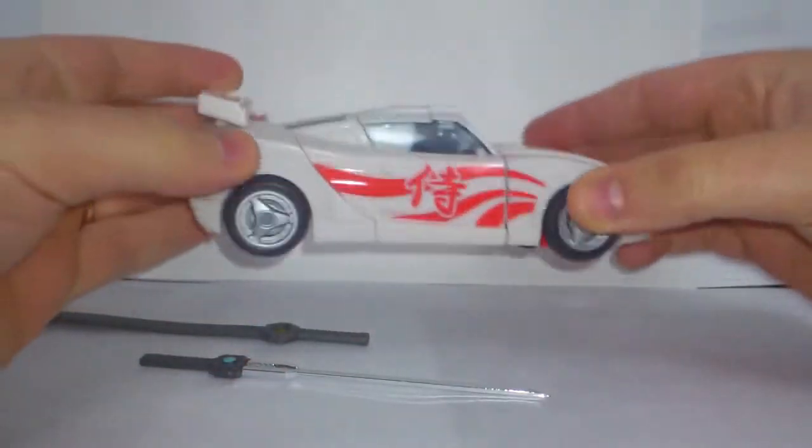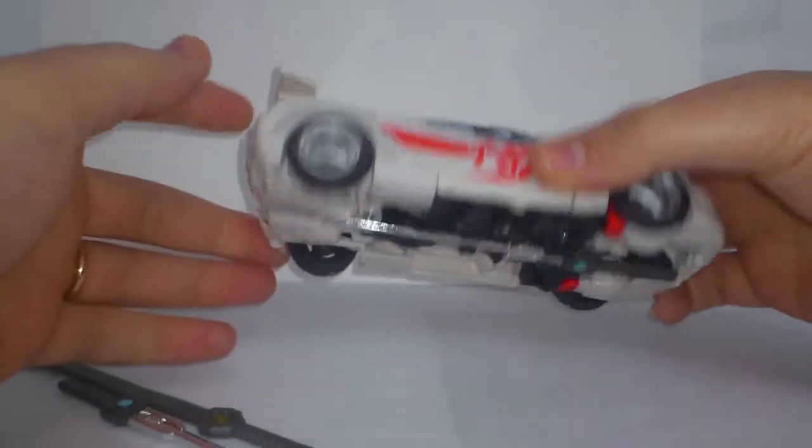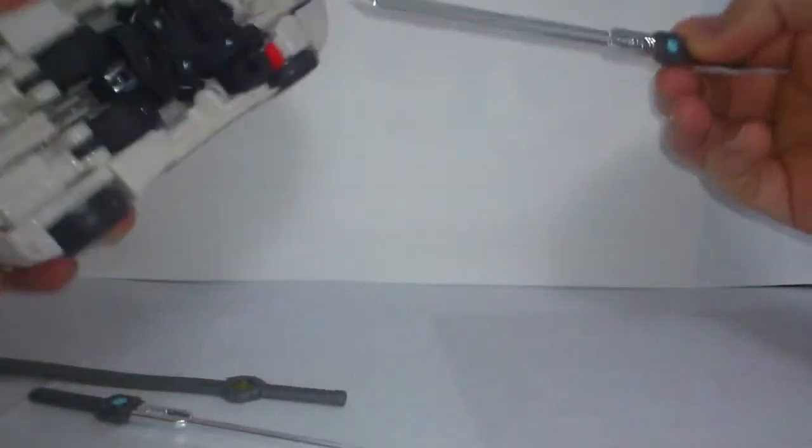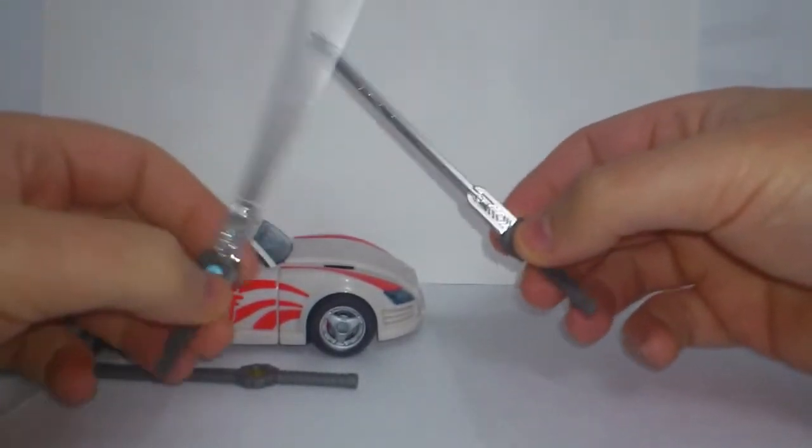And yes, you do get two, so what do you do if you can only put one on Drift? You put one on his back and one in his hand, or if you want, you can give one to a friend or to your Blur recolor of this mold.